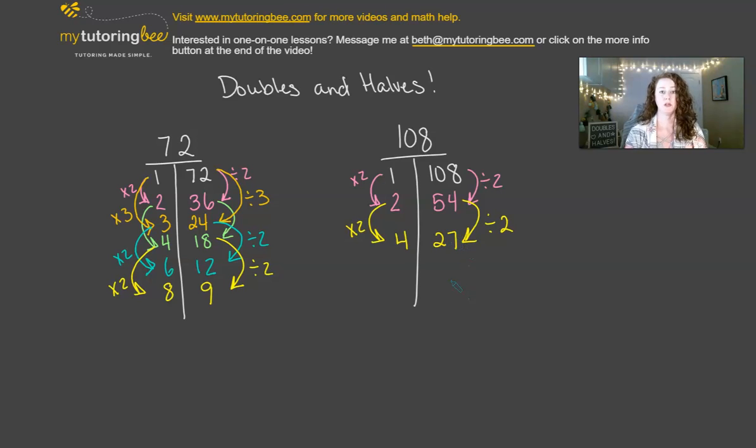Again, we can use the triple and thirds rule as well. So again, if we start with 1 and we triple that times 3, that's 3. And because 108 can be evenly divisible by 3, that's the reason why this one works. So 108 divided by 3 is 36. So that's why that one works.